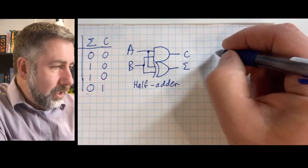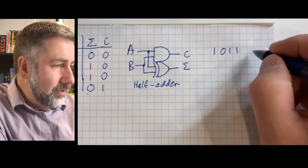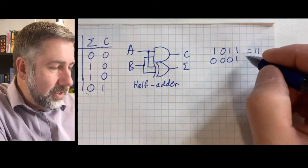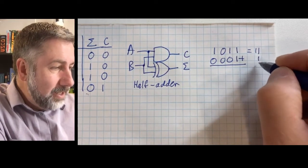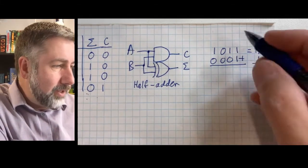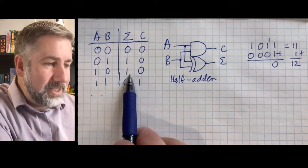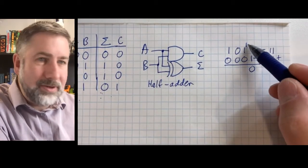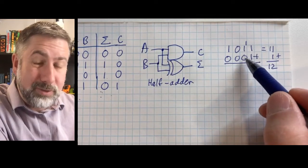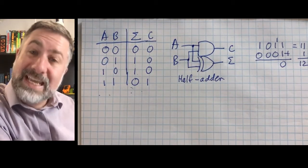Let's take two numbers: 1011, which is eleven, and we want to add one to this to make twelve. So we add 0001. One plus one is zero, carry the one. One plus one is zero, carry the one. Now we have one plus zero, which is one — but we haven't taken into account how to deal with this carry. You can imagine a situation where you have one plus one with a carry-in of one. So we're going to need some way in this logic to account for what happens when there's a carry-in to a column.